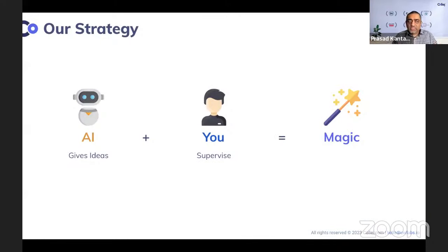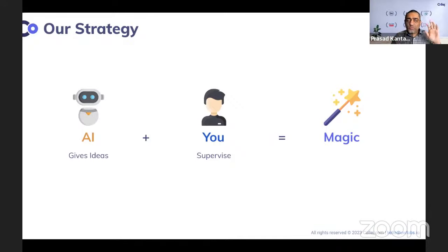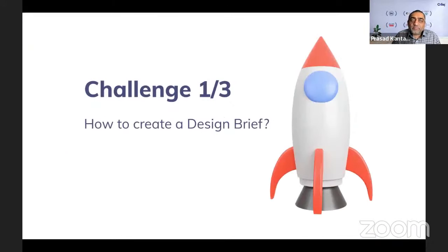Our strategy is always this: the AI gives you ideas, you supervise and give the creative energy, and then you create magic. At every step, ask yourself what the AI is contributing and what you are contributing. Feel free to challenge me and ask questions — you can unmute yourself and speak. Always make sure you understand what the AI gives you versus what you bring to create the magic.